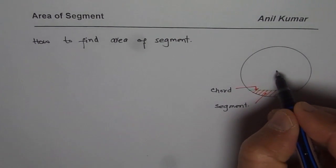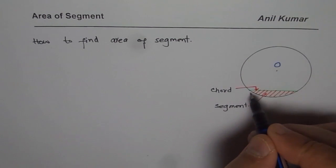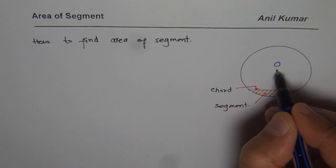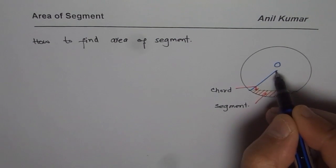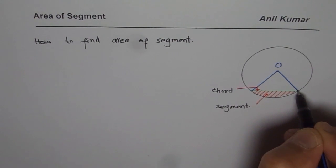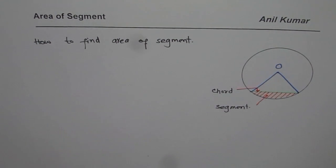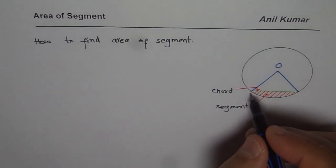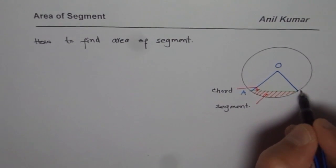So let us say that we have center at O. Then if I join the center O with the end points of the chord, let us say like this, then what do I get? In this case, you will see I get a sector. Let us say the chord is A to B.